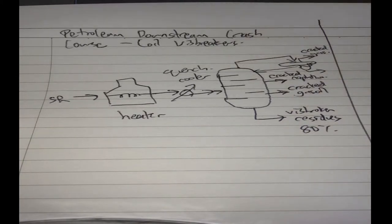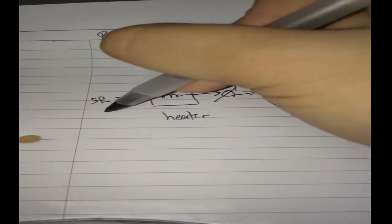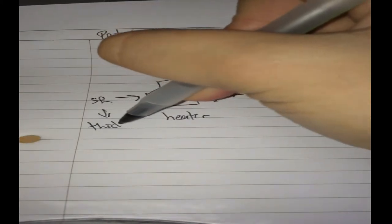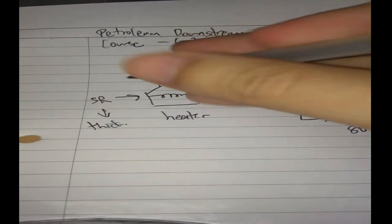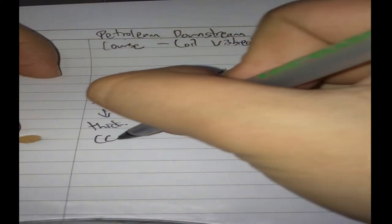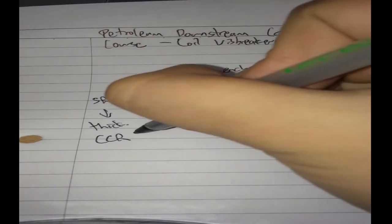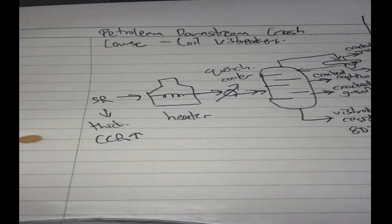Now there are a few problems with this, right? You know this stuff is thick. Short residue is very thick and it has a very good tendency to form coke, as it has a high Conradson carbon residue.